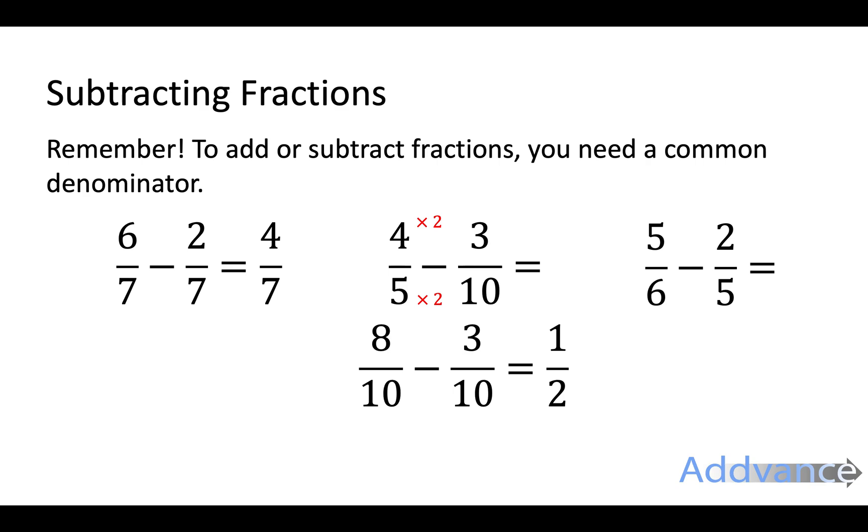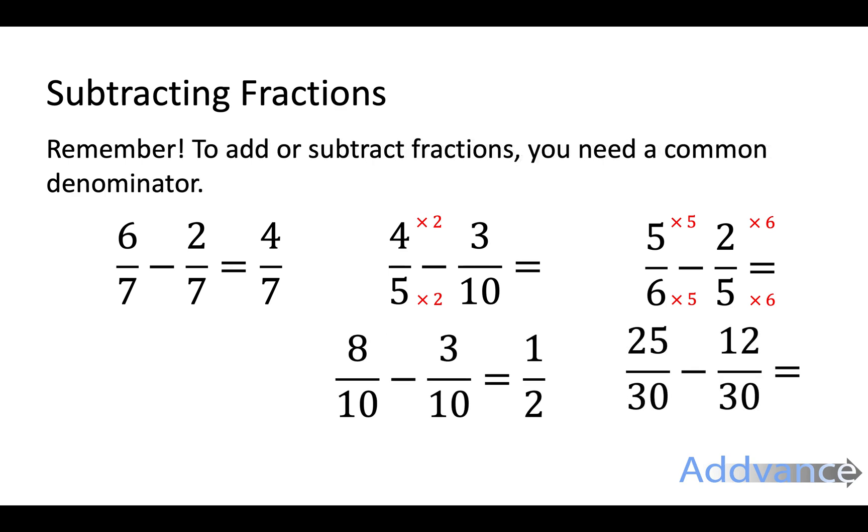Now 5 sixths minus 2 fifths multiplied by 5 multiplied by 6 and we get 25 minus 12. 25 thirtieths minus 12 thirtieths is 13 thirtieths and that's the final answer.